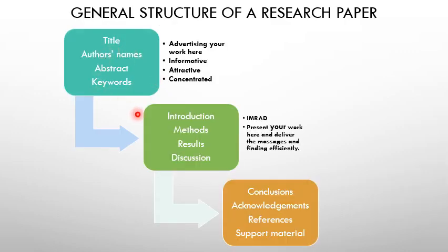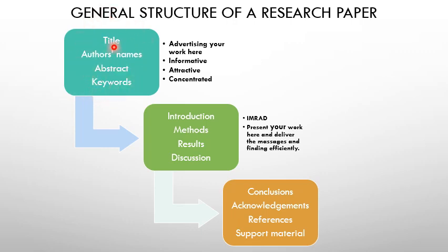The typical structure of any scientific paper consists of three main groups. In the first group, you can find the title, author's name, abstract, and keywords. This group is available online for everyone for free. You are supposed to advertise your work here, and indexing of your work mainly depends on this group. When you search for something online, the search engine looks directly at this group, so you need to be very careful when you write every single word in it.